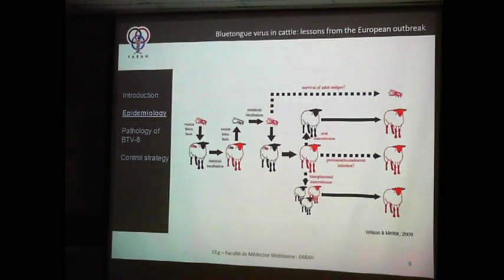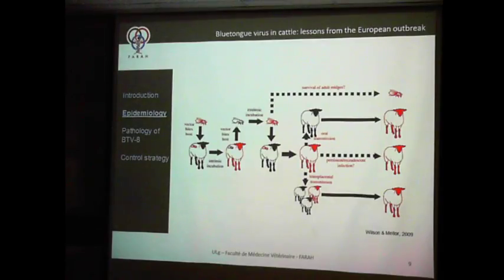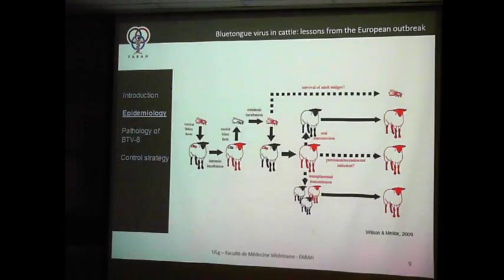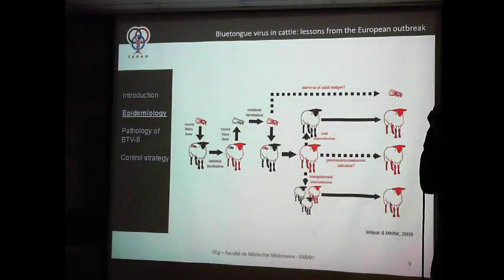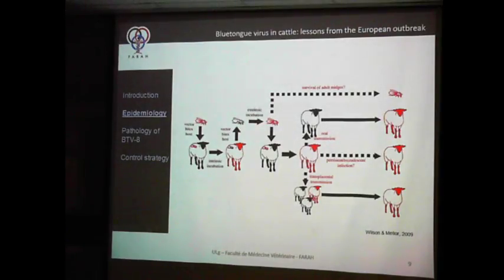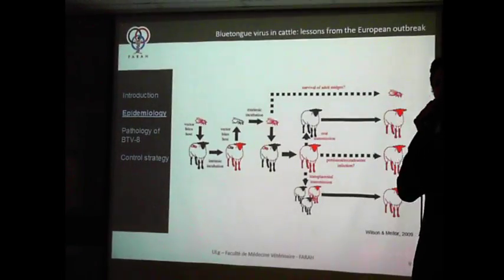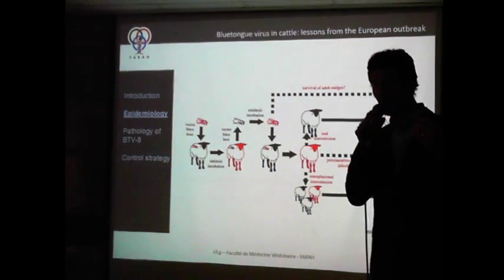The epidemiology is quite straightforward: infection by a Culicoides of an animal, which will then be infected and able to infect other vectors, which again will transmit the disease. There are several possible outcomes including oral transmission. There were several hypotheses about the possibility of persistent infection — it has been shown to be at least three months in cattle, and experiments in Belgium found it to be up to six months.